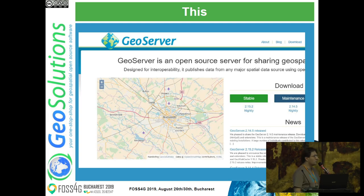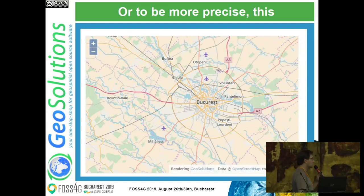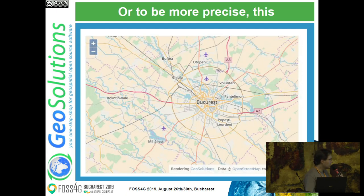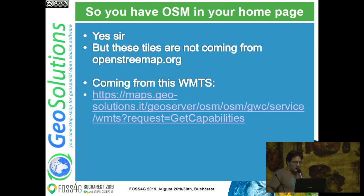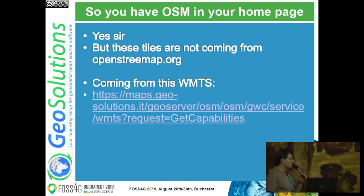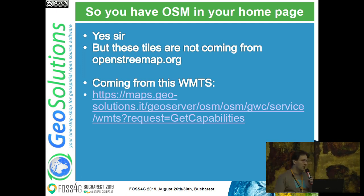So what are we talking about today? We are talking about this - and you may say, what, the GeoServer home page? No, wait, let's zoom in a bit more. Open Street Map! Well, yeah, but if you look at the bottom it says 'rendering by GeoSolutions, data from OpenStreetMap.' So it seems like you're looking at openstreetmap.org but instead it's being rendered by GeoServer. All the tiles that come from that page are not coming from the OSM tile server but from this WMTS - which is public - at this capabilities URL.